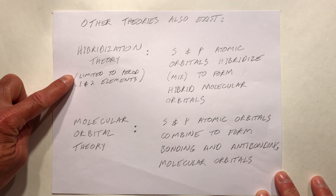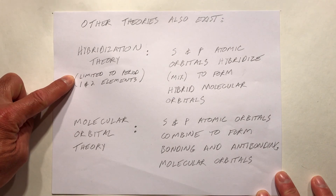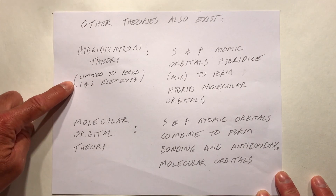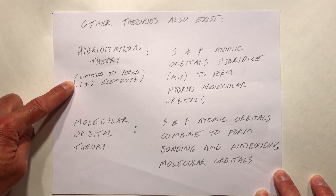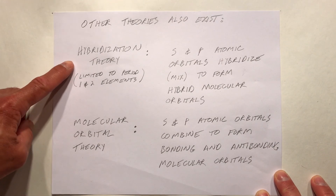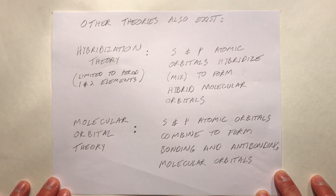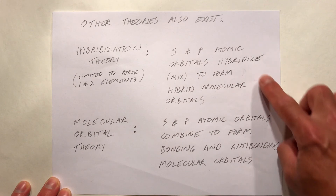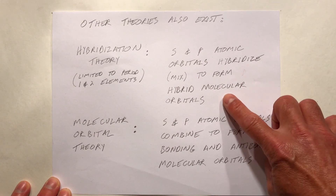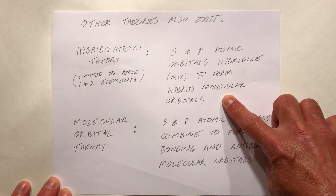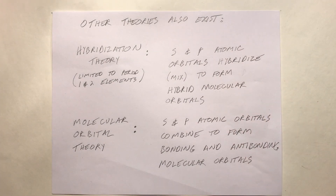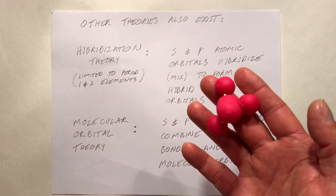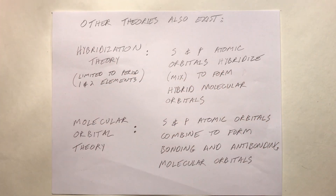Hybridization theory is limited to atoms in the first and second rows of the periodic table, but that includes carbon — the focus for organic chemists. Basically it says that S and P atomic orbitals hybridize or mix together to form hybrid molecular orbitals, which can explain shapes like the tetrahedral structure.